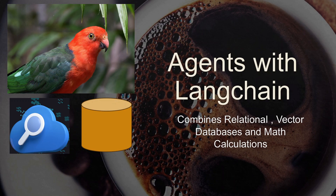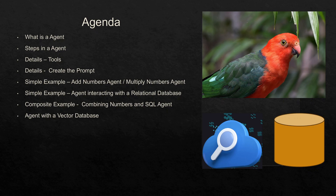This session is about Agents with LangChain, where we'll combine relational vector databases and math calculations. The agenda covers: what is an agent, the steps in an agent, the details of an agent including tools, creating the prompt, and then building simple examples — an add numbers agent and a multiply numbers agent. We'll also have an agent interacting with relational databases, a composite example combining numbers, a SQL agent, and an agent with a vector database.